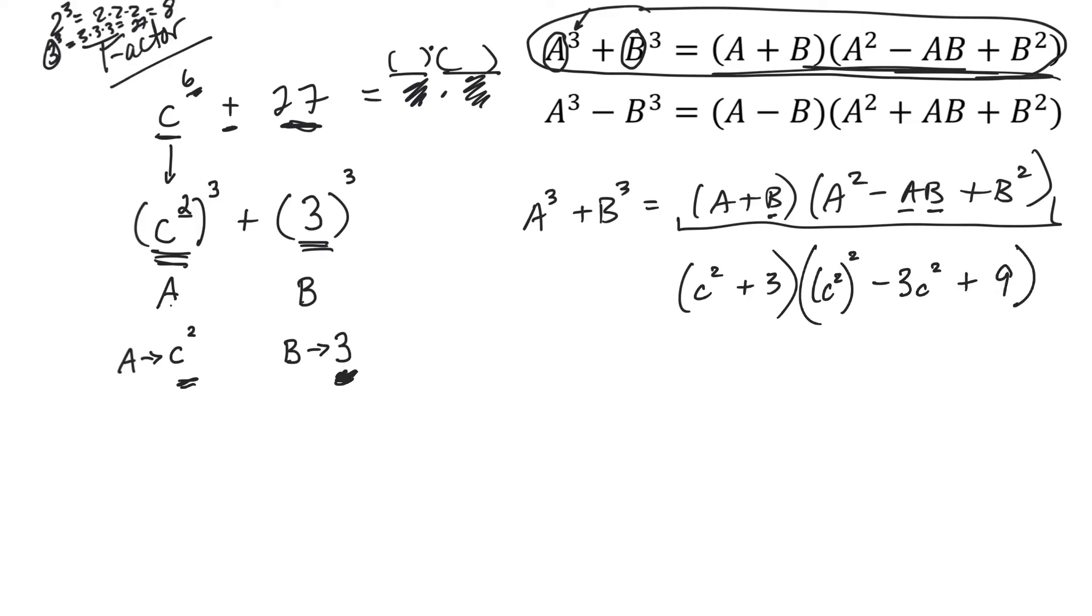Then the only thing I'd, last thing I'd do, I'd just simplify that. So it'd be C squared plus 3 times C to the 4th minus 3C squared plus 9. So that would be my, this here, sorry, this here would be my complete factorization of that.